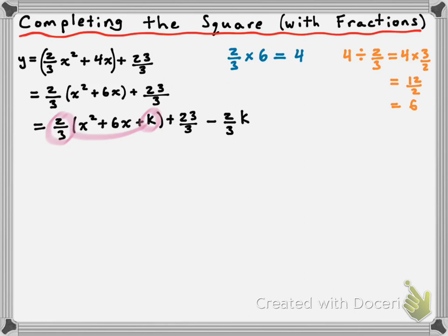Now we need to figure out what that value of k has to be. To get k, we take the middle coefficient of the trinomial in brackets — that's the positive 6 — divide it by 2 to get positive 3, then square it to get 9. So k equals 9, which makes the stuff in the brackets a perfect square trinomial. We now take that 9 and place it in where we have k.